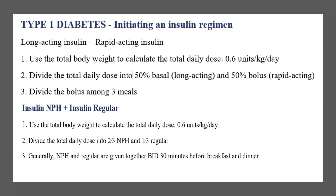For insulin NPH plus regular insulin, you also find the total body weight and calculate the total daily dose. In this case it's different: you use two-thirds NPH (the basal) and one-third regular (the bolus). Generally, NPH and regular are given together twice a day — BID — 30 minutes before breakfast and dinner. That's an important point to know.